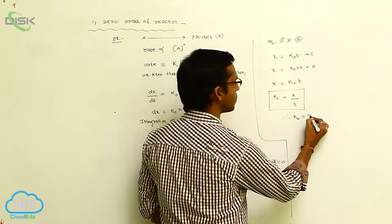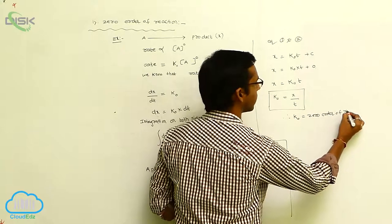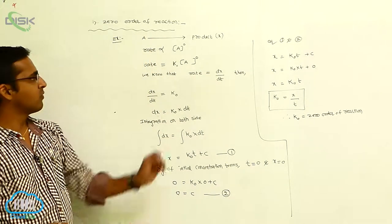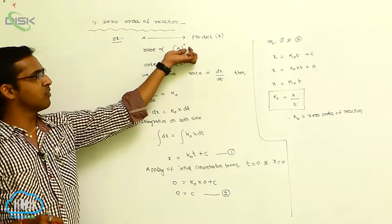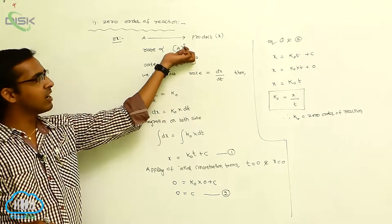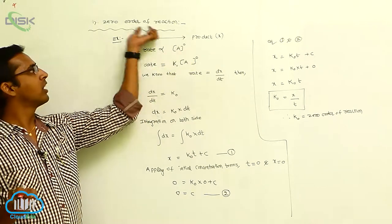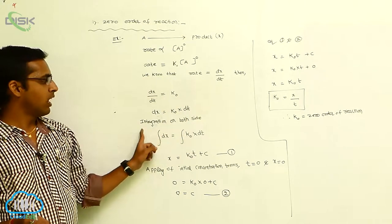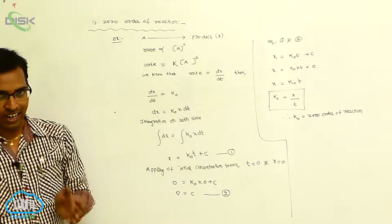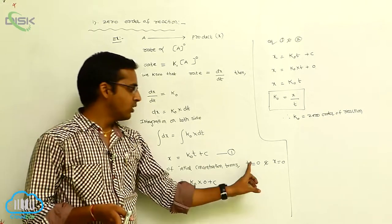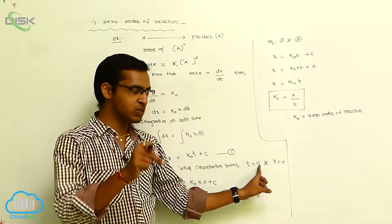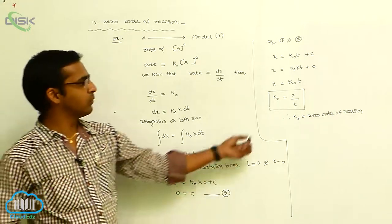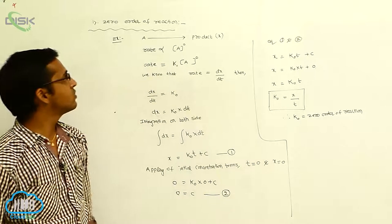This is the simple mathematical derivation of zero order of reaction. The key point: the rate is directly proportional to concentration of reactant, but the concentration power of reactant is zero because the rate of reaction does not depend upon the concentration term. So dx/dt equals K₀. Applying integration on both sides and initial concentration, at initial time there is no reaction, so initial time is 0 and product is 0. From equations 1 and 2 we get K₀ equals x/t.